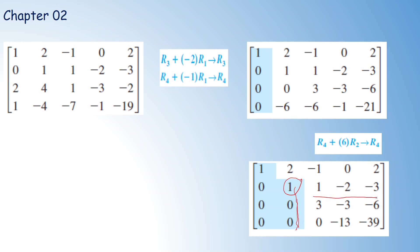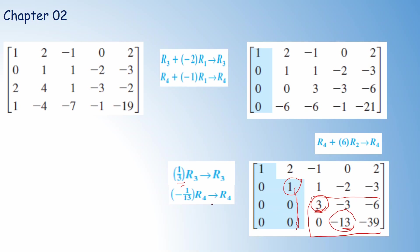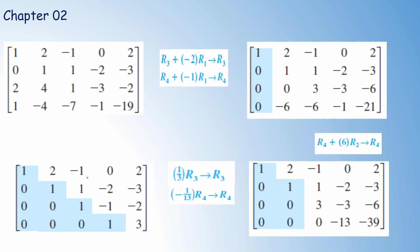We move to the next sub-matrix and need to make the leading entry equal to 1. To convert the third row's leading entry to 1, divide the third row by 3 (multiply by 1/3). To make the fourth row's leading entry 1, divide by minus 13 (multiply by minus 1/13). The resulting matrix is now in row echelon form.